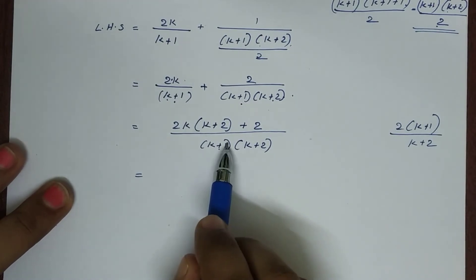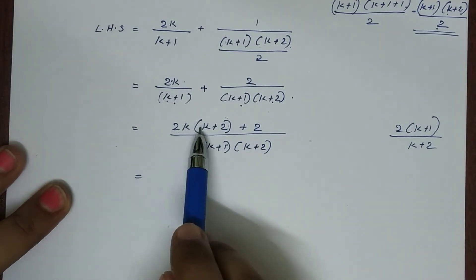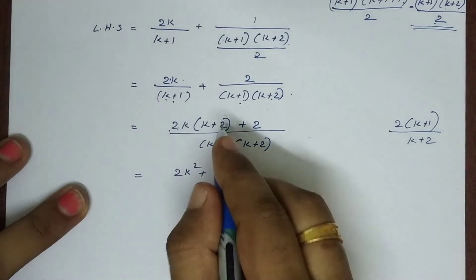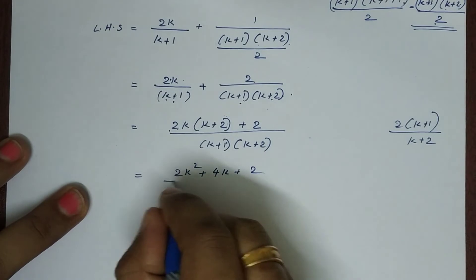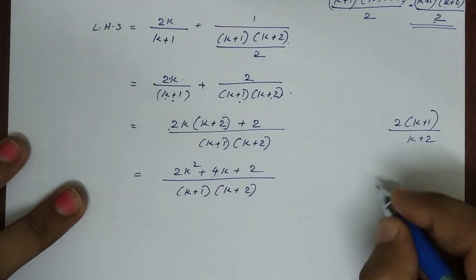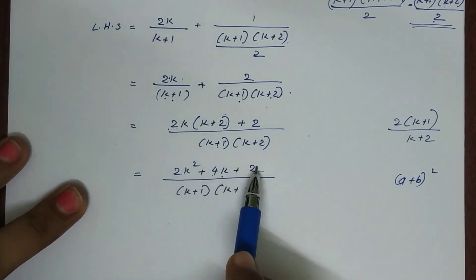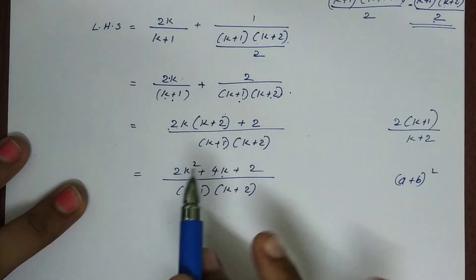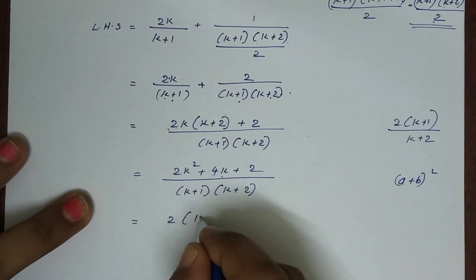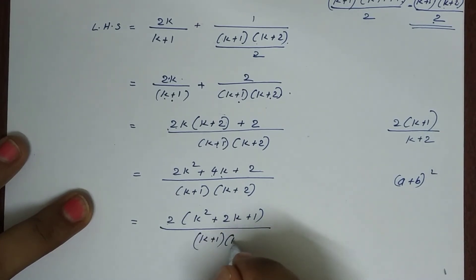The denominator is (k+1)(k+2) and we multiply 2k accordingly. This gives 2k squared plus 4k plus 2, all divided by (k+1)(k+2). The numerator 2k squared plus 4k plus 2 equals 2(k squared plus 2k plus 1), which is 2(k+1) squared.